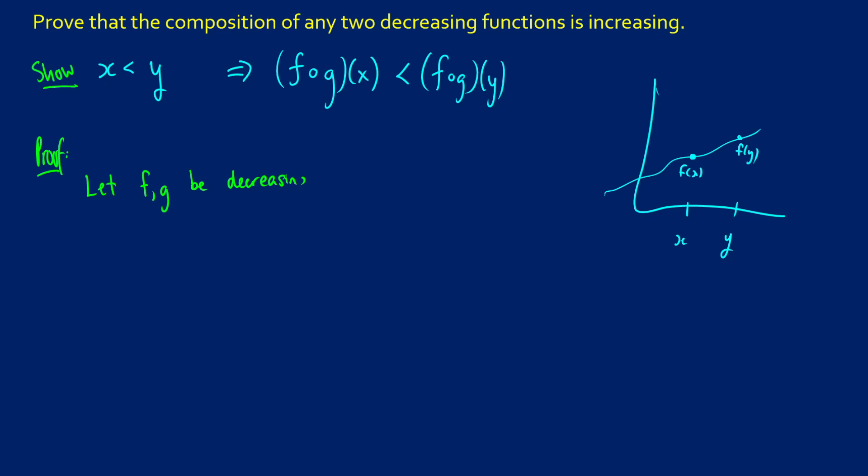So what does a decreasing function look like? Well, if we take a graph, it would look like pretty much the same thing as before, but f of x would be greater than f of y. So what this means is that if x is less than y, we're going to get that f of x is greater than f of y. And this is going to be similar for g as well. Then g of x is greater than g of y.